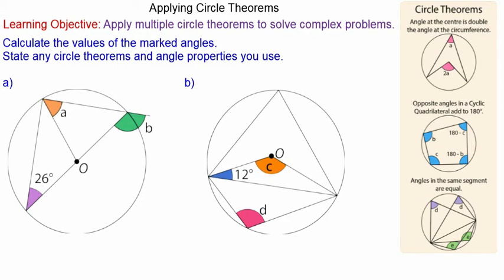In this lesson we're going to apply multiple circle theorems to solve these problems. For question A, we have the angle at the center is 180 degrees, so the angle at the circumference would be 90 degrees.